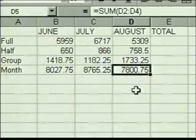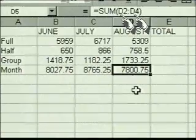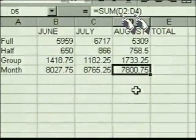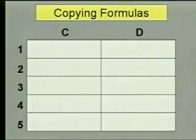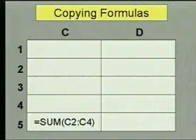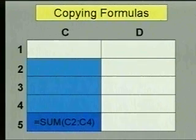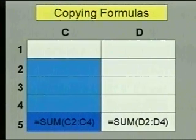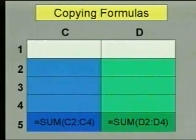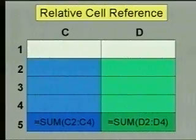The sum of the August column is displayed. Notice that even though we copied the formula from column C, the cell addresses in the new formula show column D. Our original formula in cell C5 is the sum of numbers in the range above that cell. When we copied from C5 to D5, the formula was automatically changed to sum the same relative range above the new cell. This is called a relative cell reference. Later you'll learn how to use absolute cell references — ones that don't change when they're copied.